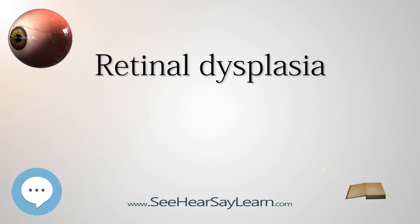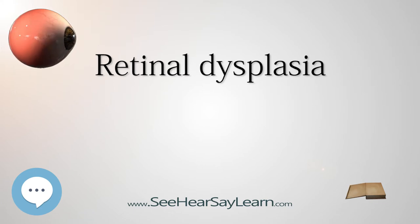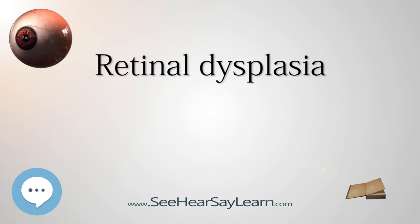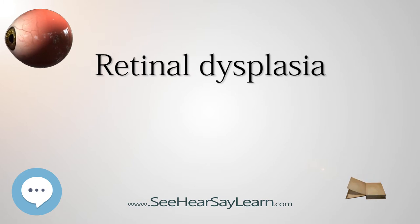Most cases of retinal dysplasia in dogs are hereditary. It can involve one or both retinas. Retinal Dysplasia can be focal, multifocal, geographic, or accompanied by retinal detachment. Focal and multifocal retinal dysplasia appears as streaks and dots in the central retina.